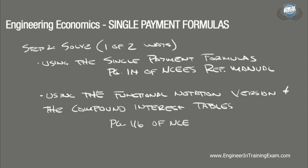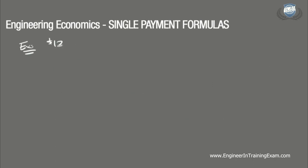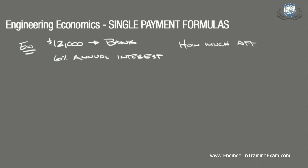A business owner puts $12,000 into a bank account with a 6% annual interest rate. What would the equivalent payment be after three years? The goal is to determine what payment would be equivalent three years down the road had the business owner invested $12,000 now at a 6% annual interest rate.